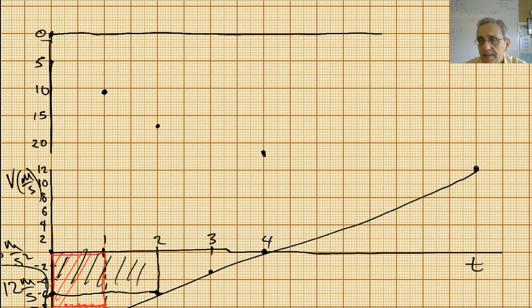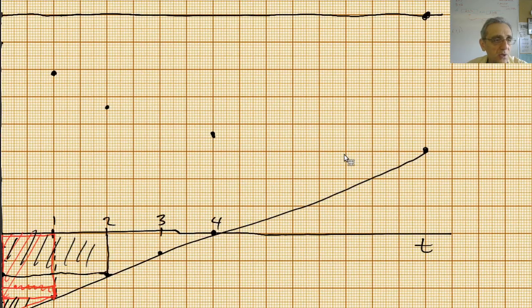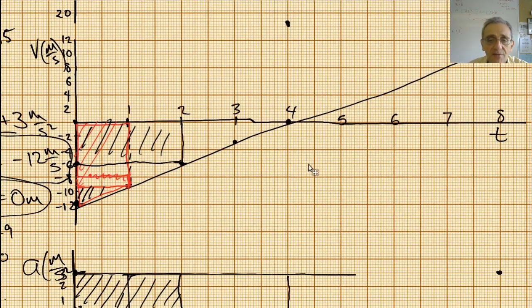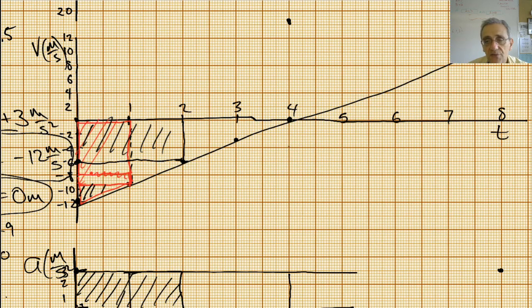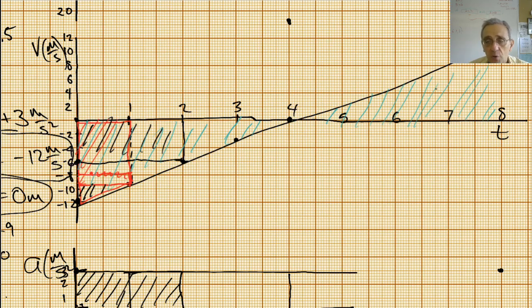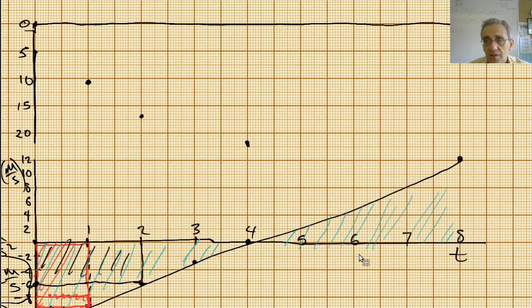I know the other side's going to be symmetric, and I can extend this. I'm being a bit lazy and not calculating all the other points, but essentially I'm going to be back to zero here at eight seconds. That's because if I look at my velocity graph, this blue area is negative 24, and this area here is positive 24. When I add those up — negative 24 and positive 24 — I get zero. That's why this is at zero.